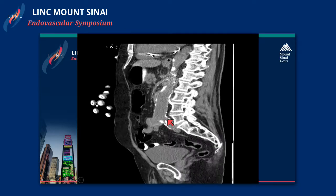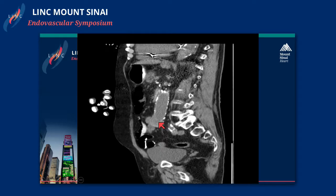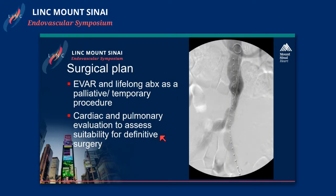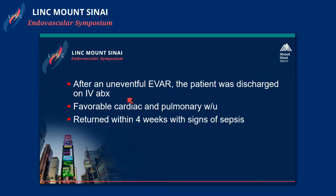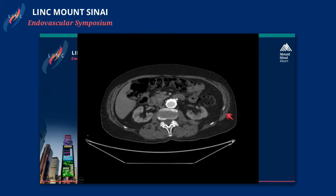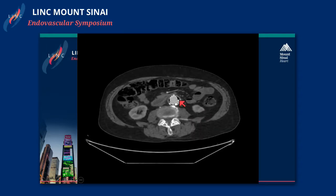Shown in a couple different projections, you can see the bowel and the area of continuity. Given this patient presented with a GI bleed, we initially managed with a stent graft as a temporizing maneuver. We then proceeded with cardiopulmonary evaluation to assess suitability for definitive surgery. After an uneventful EVAR, he was discharged on IV antibiotics. He had a favorable cardiac and pulmonary workup and was originally scheduled to return for an elective definitive operation.